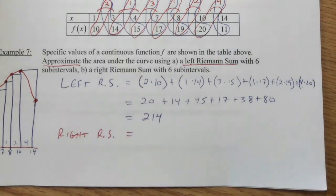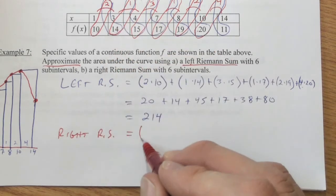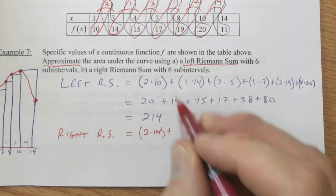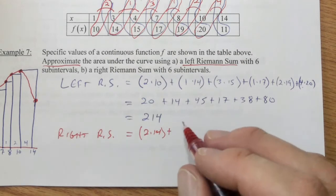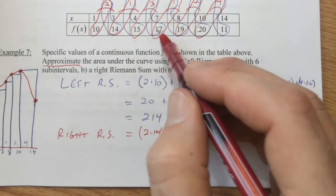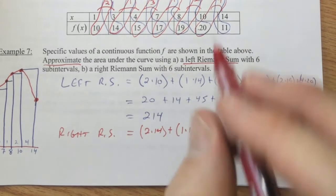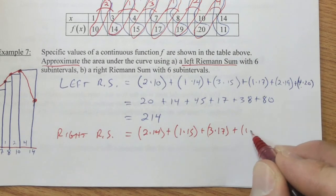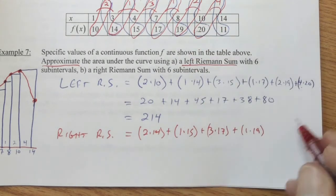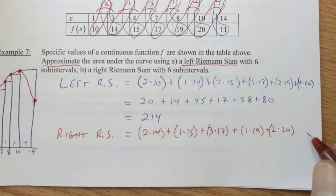When we put this all together, two times fourteen, and then one times fifteen, and then three times seventeen, and then one times nineteen, two times twenty, and finally four times eleven.